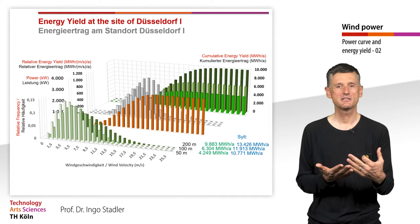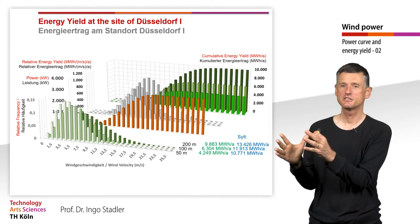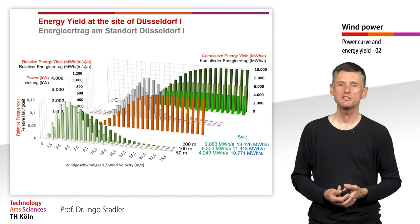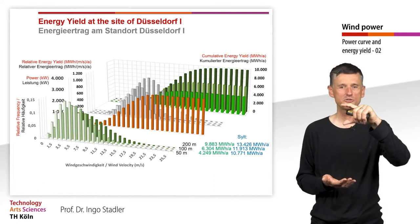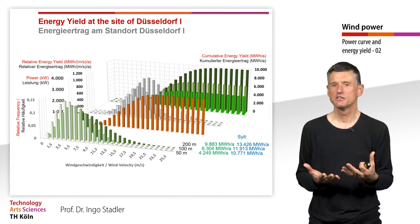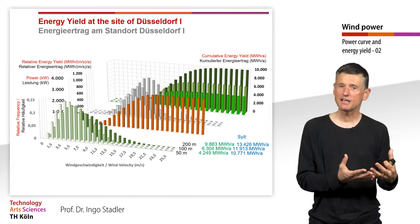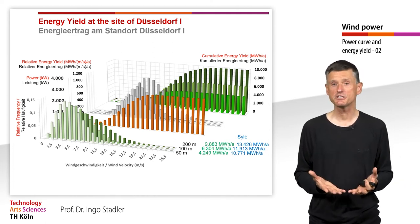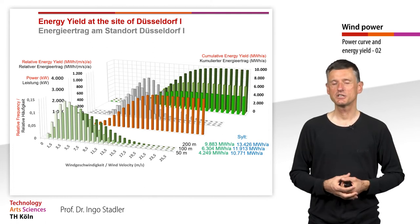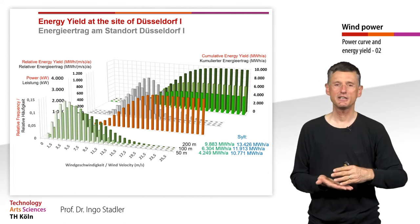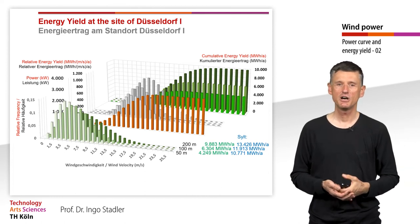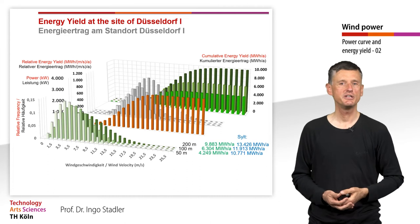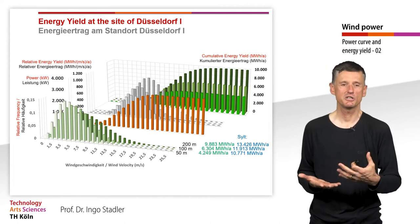At all heights, the coastline is always the better site. But when we increase height from 50 to 100 to 200 meters, the difference at the Sylt coastline is only small, whereas at the inland site in Düsseldorf it is more than doubling the energy yield. This is why we see increasingly taller towers being built inland, while coastal wind turbines remain much shorter — because at the coast, building higher simply doesn't make economic sense.